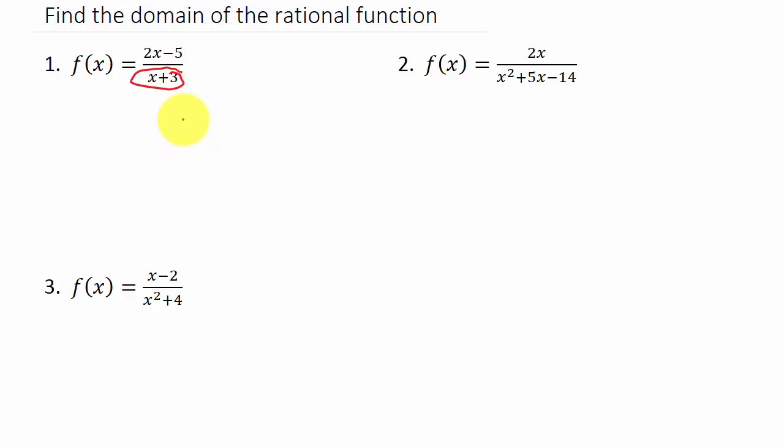That means this denominator here, this x plus 3, cannot be 0. So we're going to take the x plus 3 and set it equal to 0 and solve. Subtract 3, so I get x equals negative 3. My domain can be anything except for negative 3.